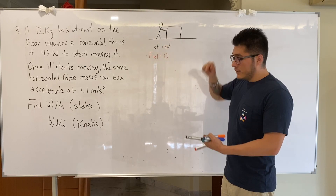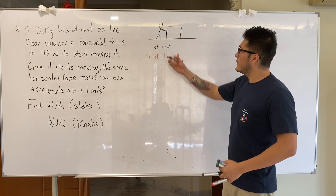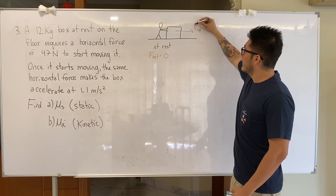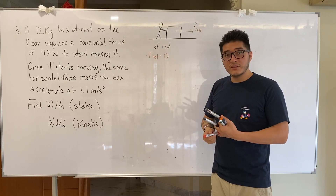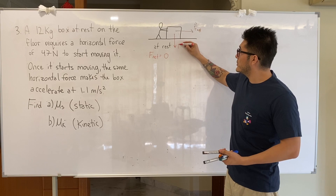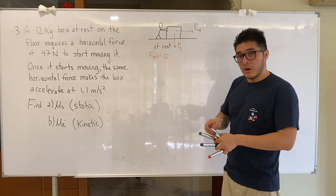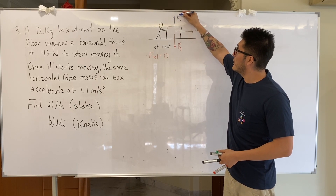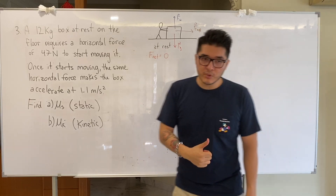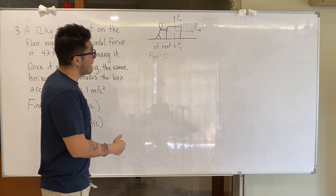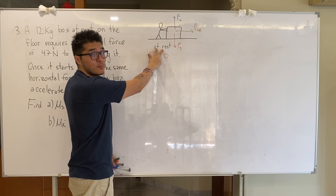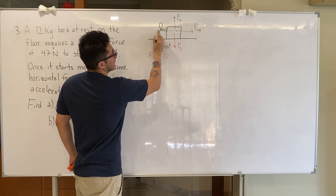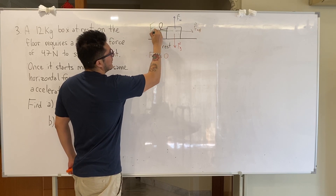We identify the forces: the applied force is to the right, gravity (fg) acts directly downward, the normal force (fn) points upward perpendicular to the surface, and since the box is not moving, the friction force is specifically called static friction (fs), acting to the left.